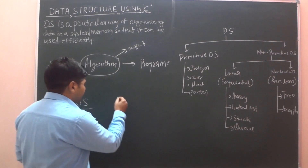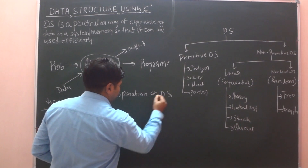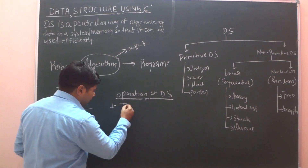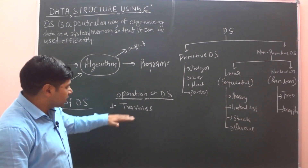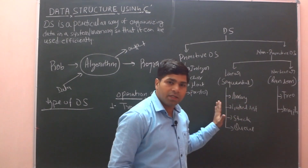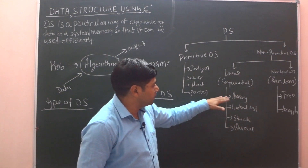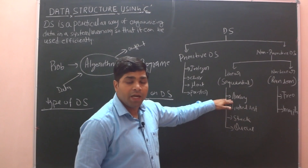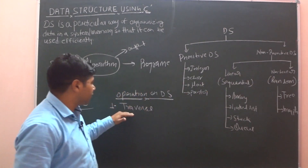Next is operations on data structure. The first operation is traversal. What is the meaning of traversal? Whatever data structures you have — whether non-linear or linear — whatever elements you have stored, suppose using an array you stored 10 elements, if you need to display those elements or visit each element at least once, what do we call that? Traversal.